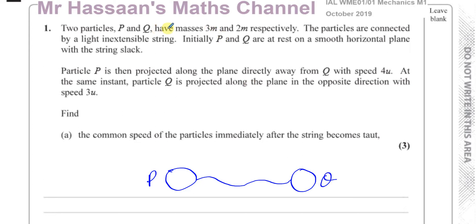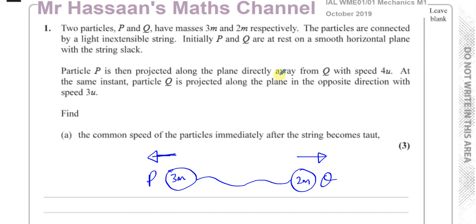We know that the mass of P is 3m and the mass of Q is 2m. So basically what's happened is P has been projected in a direction away from Q and Q away from P. P is projected this way with speed 4u, and for Q it's the opposite direction with speed 3u.